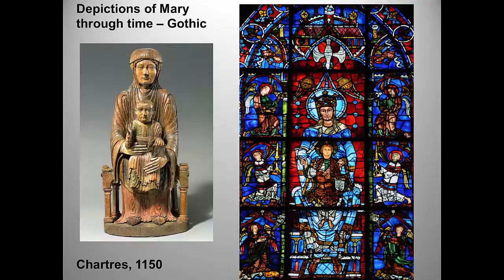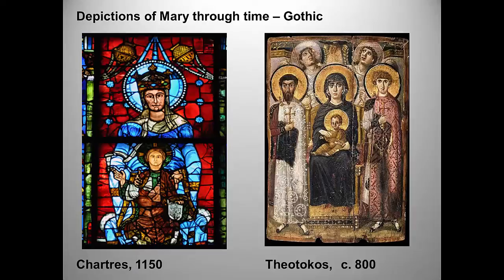The Notre Dame de la Belle Verrière window is very early Gothic. It predates and survived the fire that partially destroyed the cathedral in 1194. You should see the resemblance to the Romanesque Throne of Wisdom sculptures. There are even similarities to the early Byzantine Theotokos icon in the mostly frontal pose and the surprisingly adult Christ child. Both works also direct light toward the central figure of Mary, although in different ways.